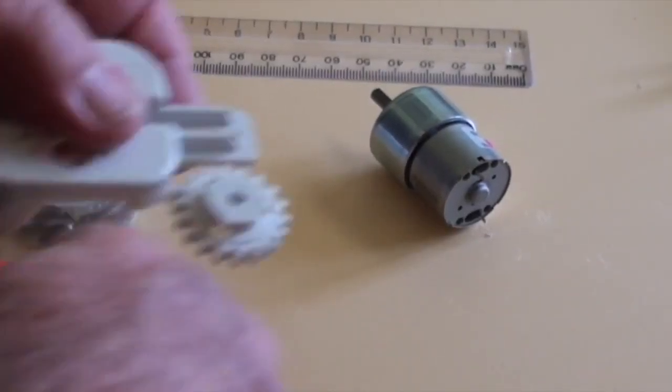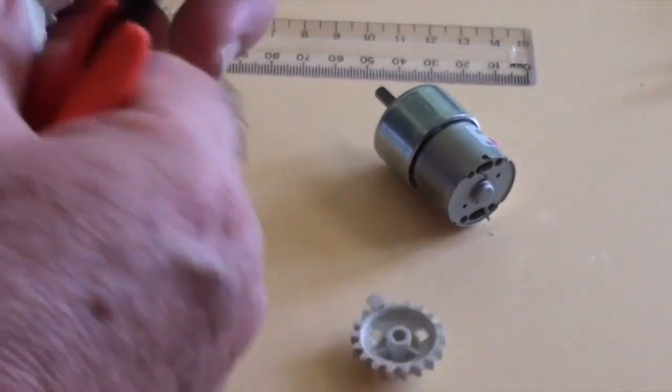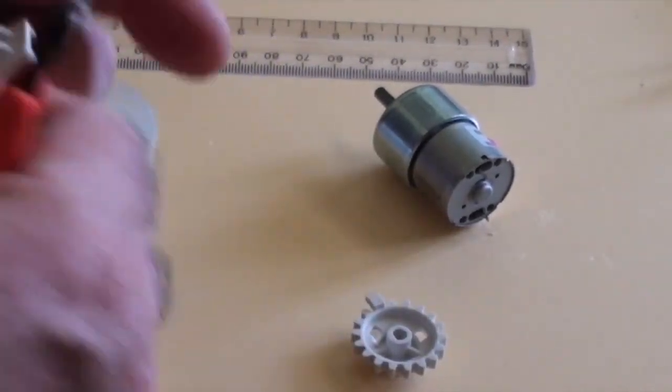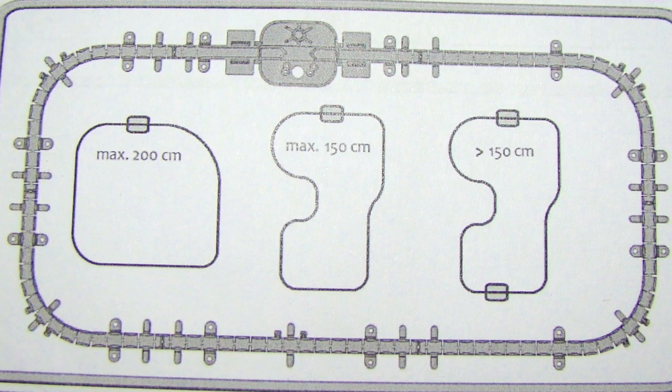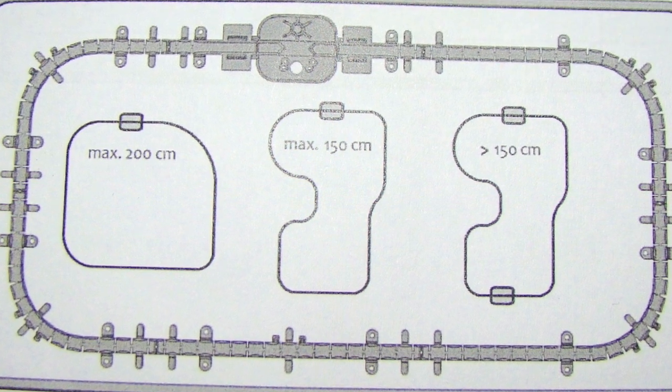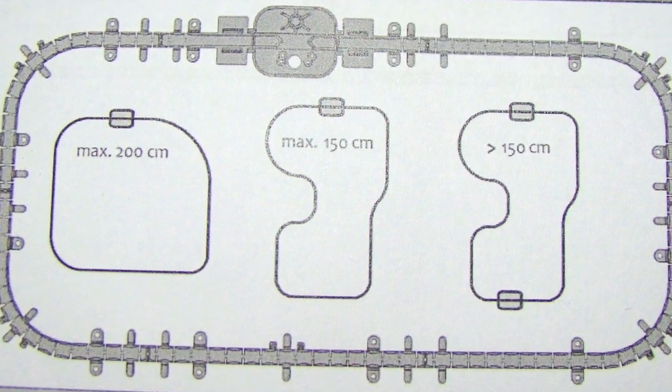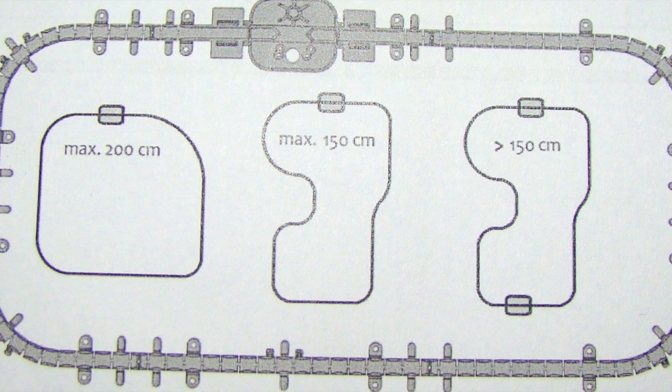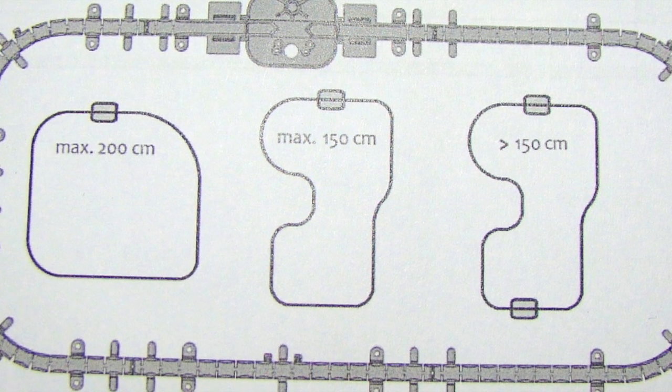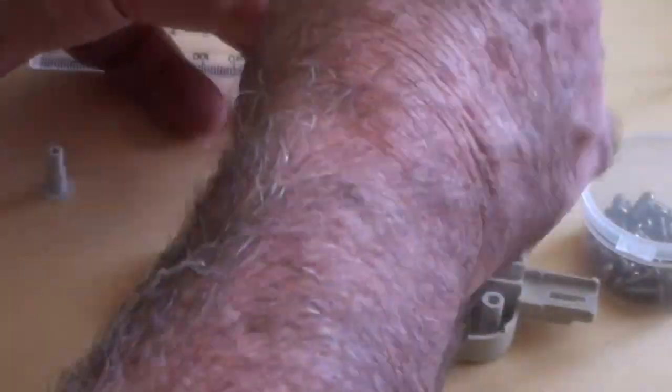The drive unit is the heart of your MagnaRail system, and depending on how large your layout is, one motor will drive about 150 centimeters of chain in a simple circle or oval without any sharp turns and cope with up to four to five vehicles or bicycles.